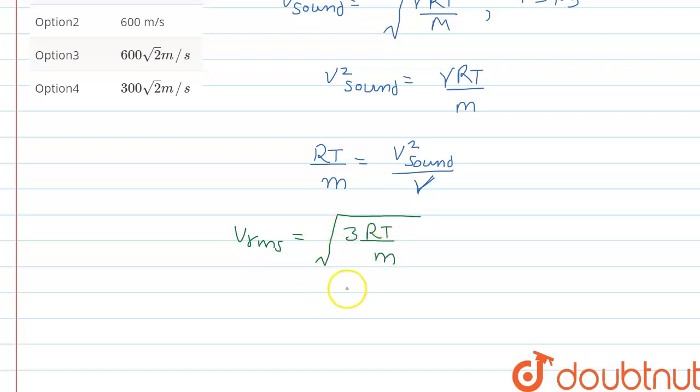Why did we calculate RT by m? So that we can put this form in this formula. Now just we have to put the values.